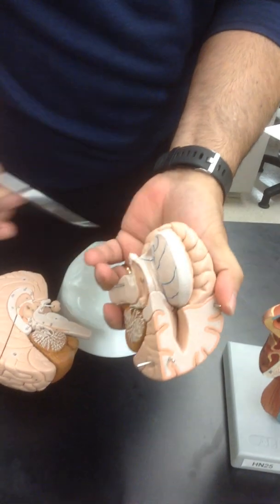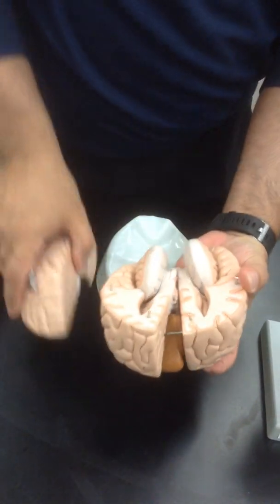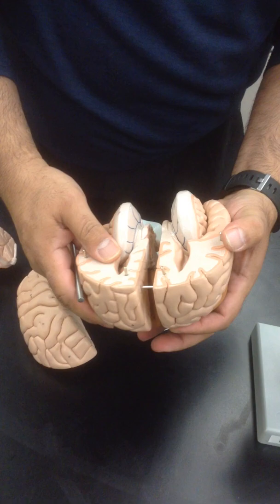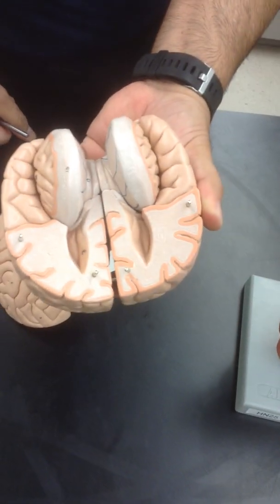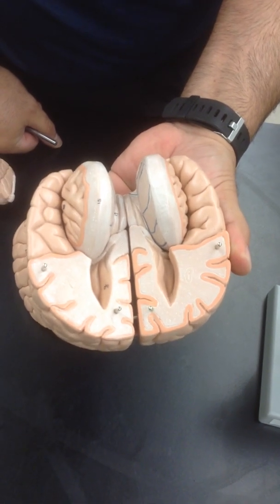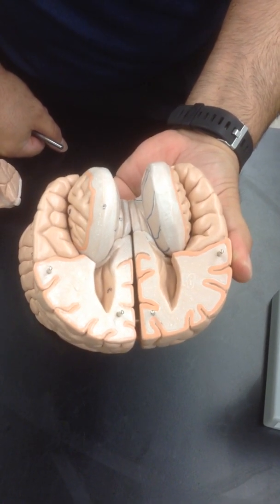You can see it's composed of two egg-shaped structures. These two egg-shaped structures are known as the diencephalon, which is composed of thalamus, hypothalamus, and subthalamus area.